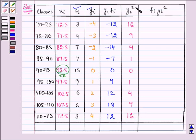Now we need to multiply fi with yi square and on doing so we have 48 that is 3 into 16, 4 into 9 giving us 36, 7 into 4, 28, 7 into 1, 7, 15 into 0, 0, 9 into 1, 9, 24, 9 into 6 giving us 54, and 3 into 16 giving us 48.